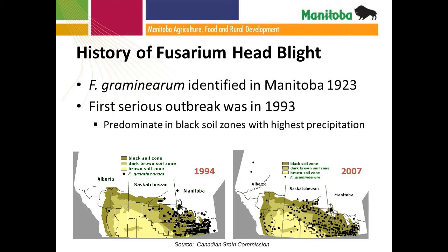That 1993 outbreak was in part due to high levels of precipitation throughout the growing season. The Canadian Grain Commission noted that about 7% of wheat graded in 1993 was graded as sample on account of fusarium damaged kernels, and actually 36% was graded feed. They estimated that the cost of that 1993 epidemic from fusarium head blight was about $75 million — a huge financial impact to producers and associated industries.